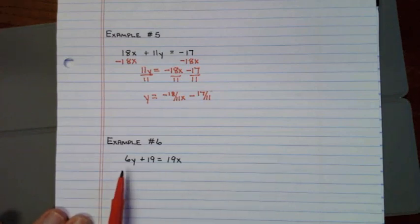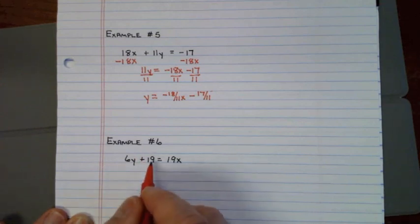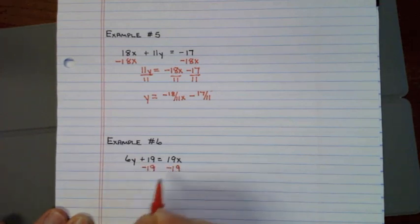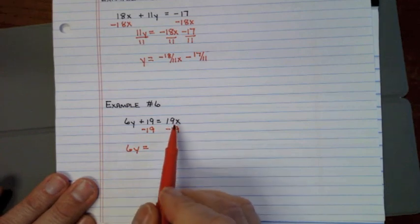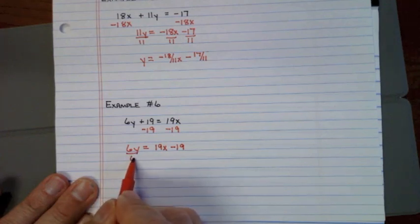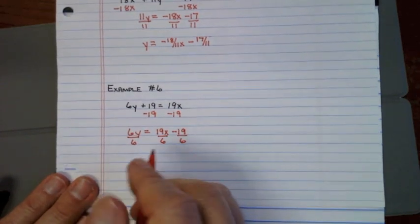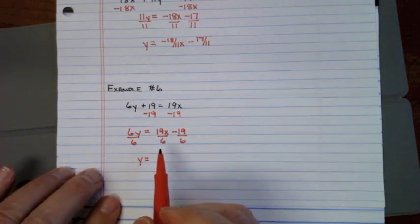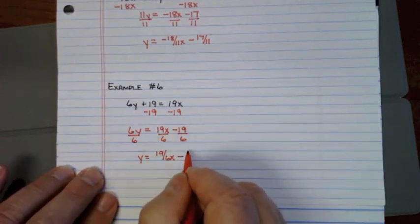Example six: I need to get Y completely by itself. When solving a two-step equation, add or subtract before you multiply or divide. I subtract 19 from both sides, leaving 6Y. The slope with X goes first and the Y-intercept goes on the end, so I write negative 19 on the end. Then dividing everything by 6, it becomes a fraction: Y = 19/6 X minus 19/6.